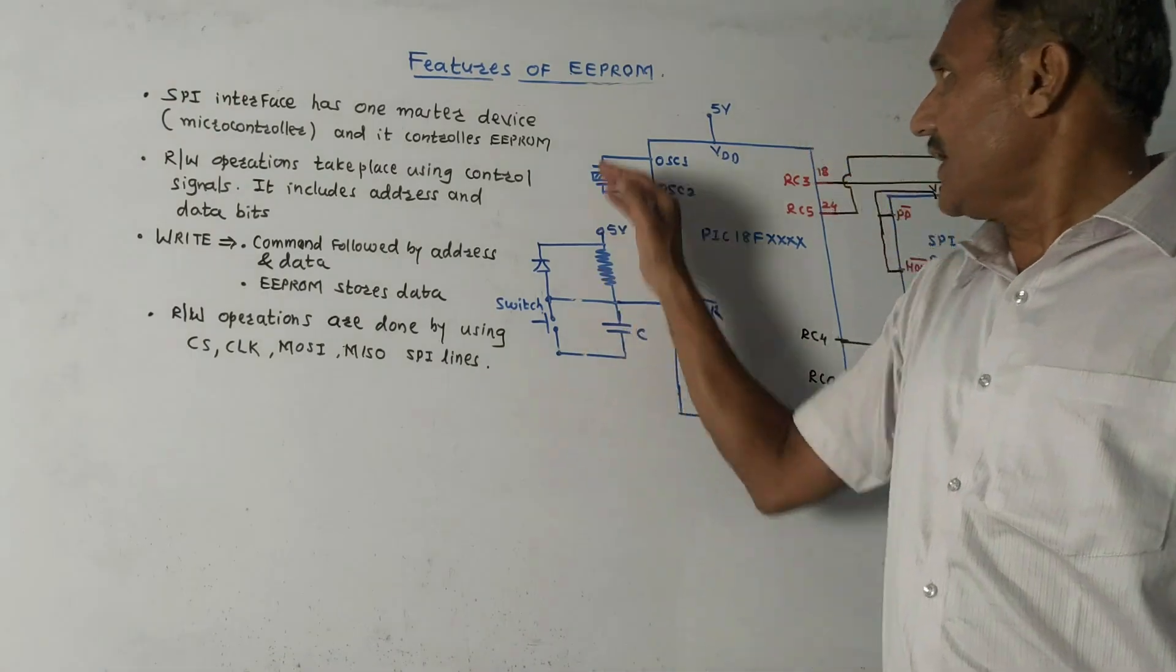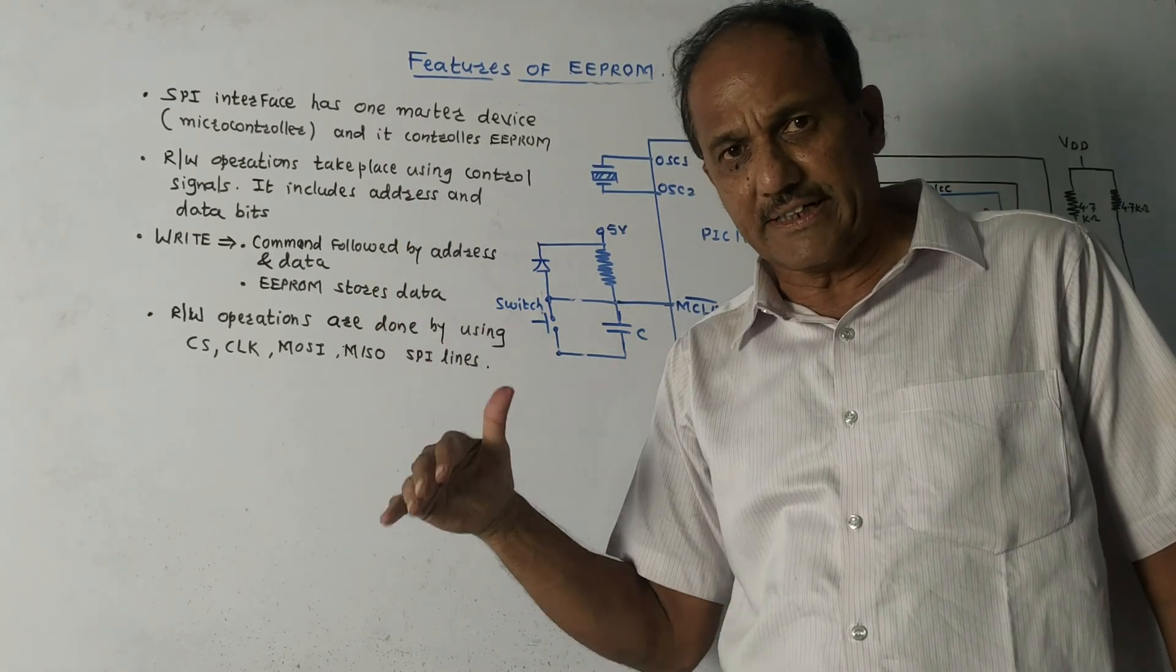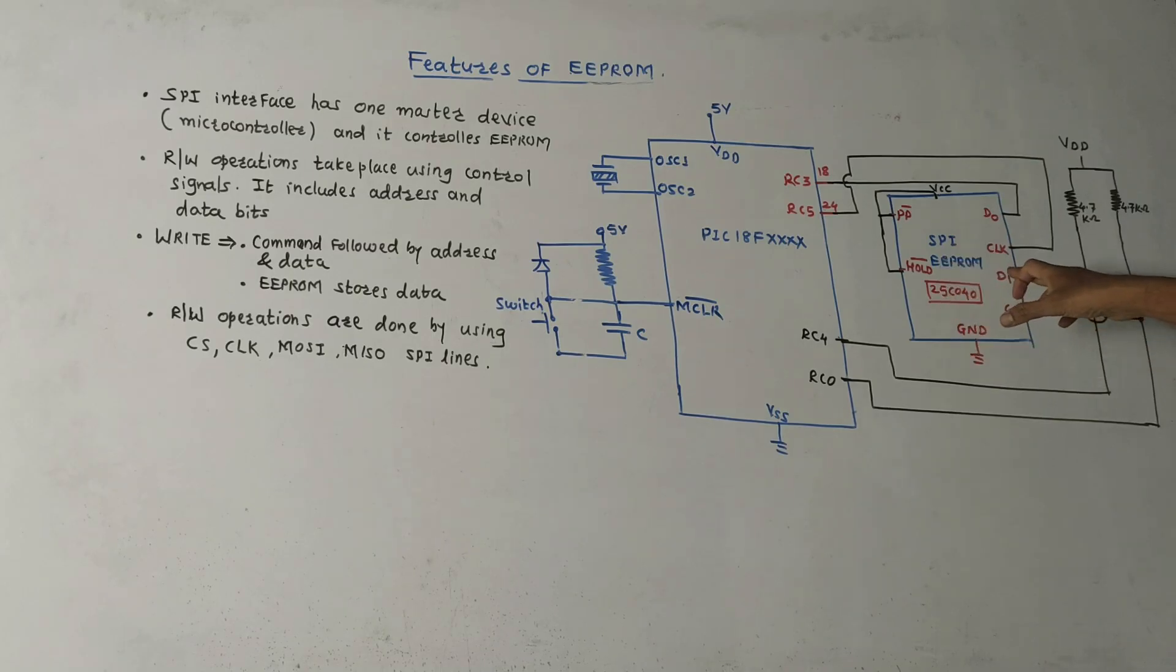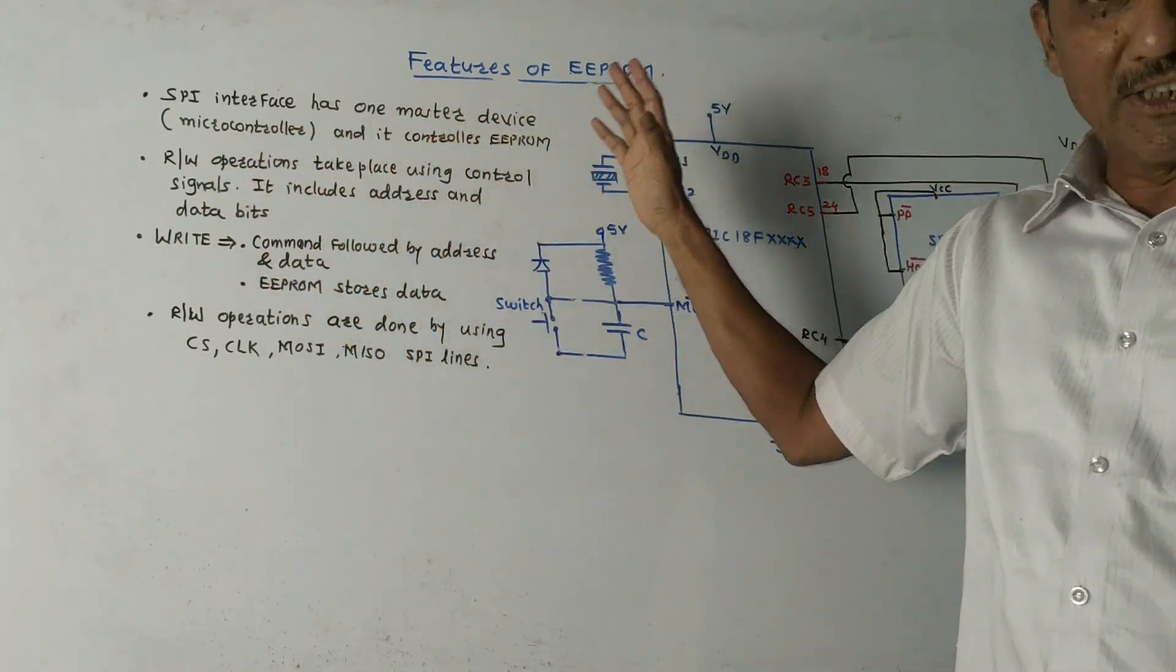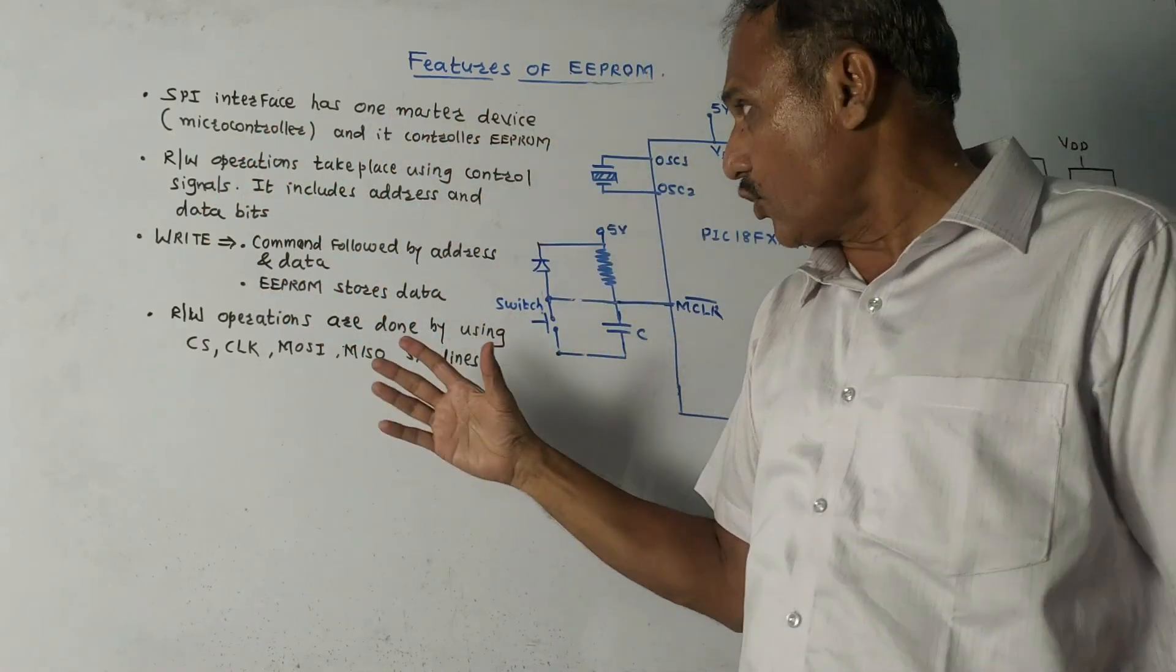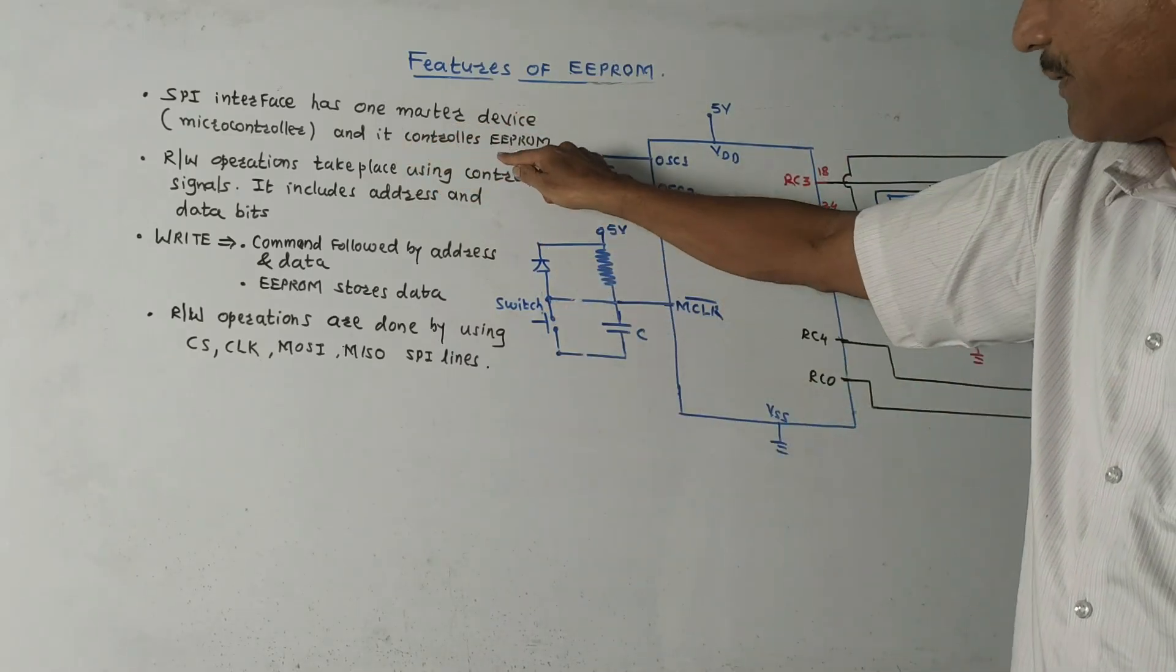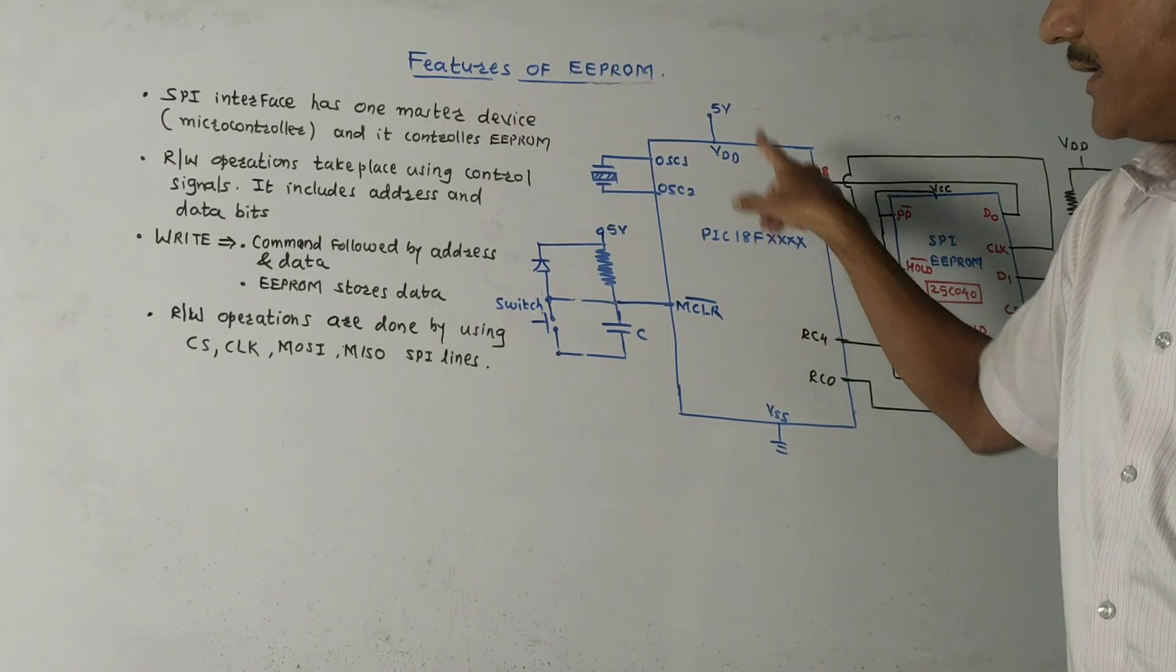Now SPI interfacing of EEPROM. We already studied SPI interface in detail. This diagram shows how to interface EEPROM using SPI mode. SPI interface has one master device, usually a microcontroller, that controls the peripheral device. In this case the peripheral is EEPROM.